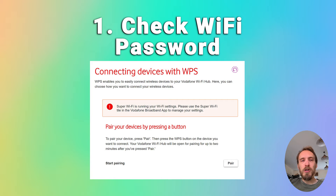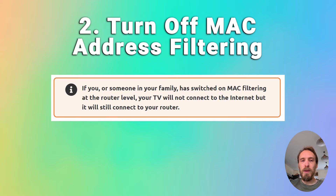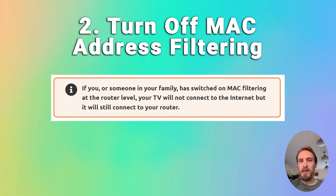You also want to make sure that your router is not set up for MAC address filtering. If you or someone else in your family has switched this on at the router level, your TV will be able to connect to the router but won't be allowed to connect to the internet through it. If you're seeing a TV that is connecting to the router but can't get internet, check for MAC address filtering.